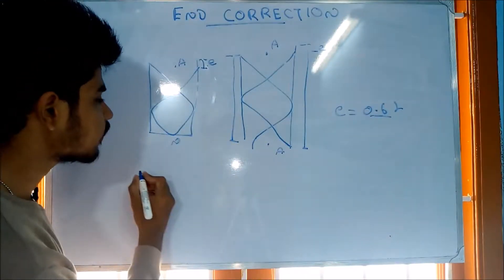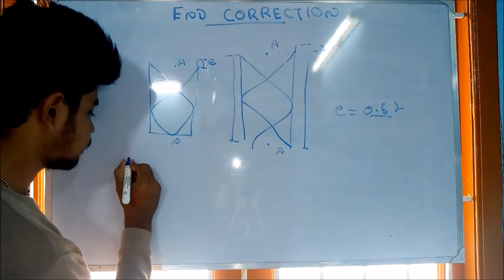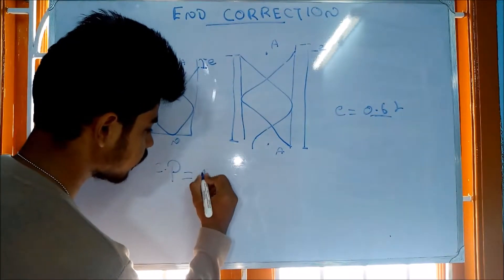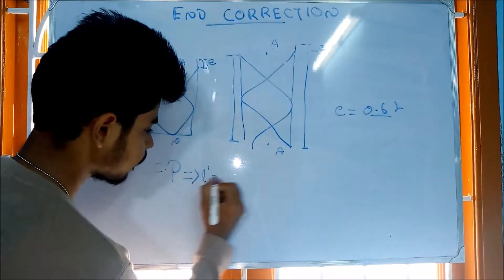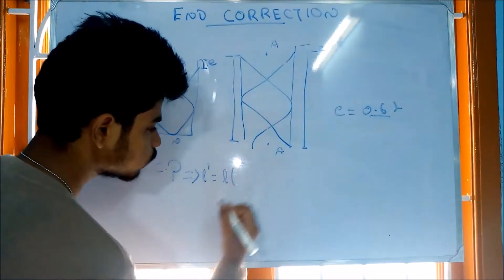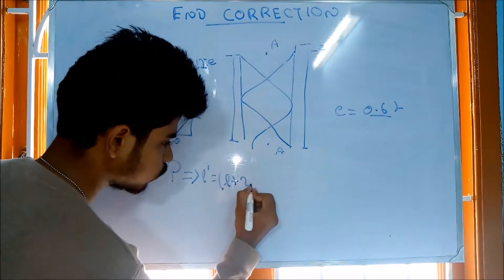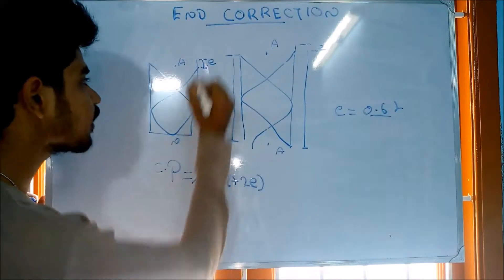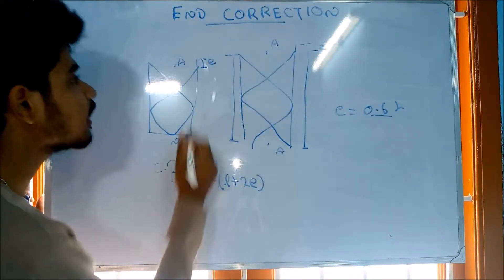L prime is equal to L plus 2E. This L is the length of the pipe, so L prime is the effective length.